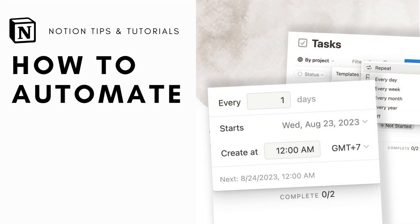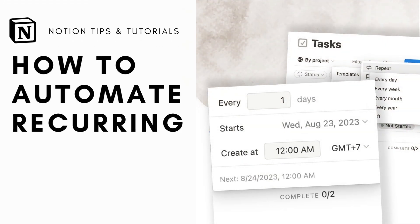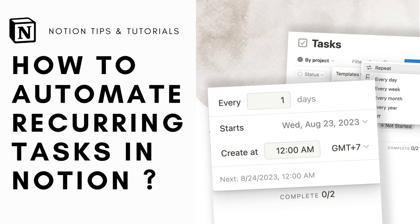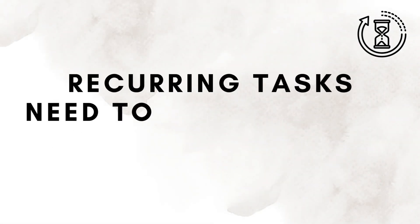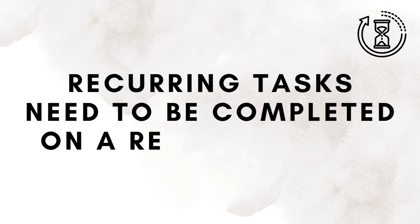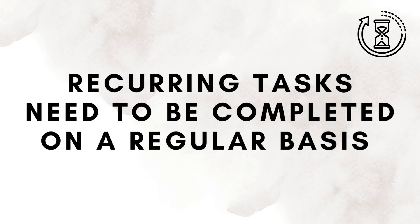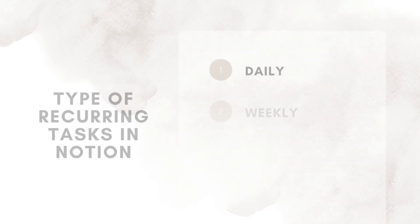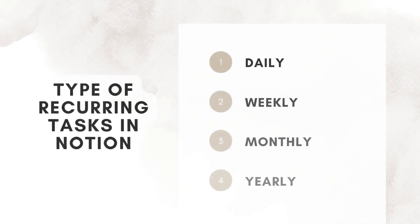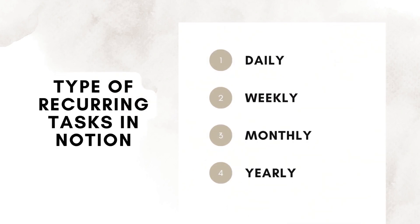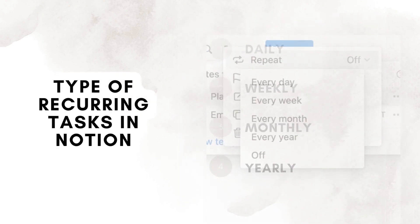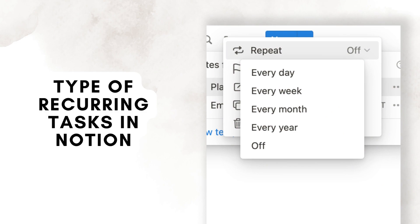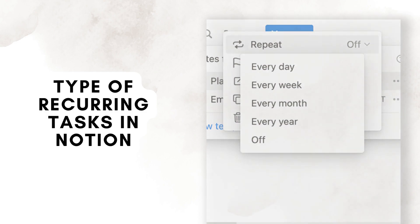Did you know about a useful Notion feature where you can set up recurring tasks? In this video, we will guide you step by step with this feature. Recurring tasks are tasks which need to be completed on a regular basis. This can include daily, weekly, monthly, quarterly, and yearly intervals. By creating a system for recurring tasks, we are more likely to stay on track with routines and meet our goals. Let's master this feature through a few examples.